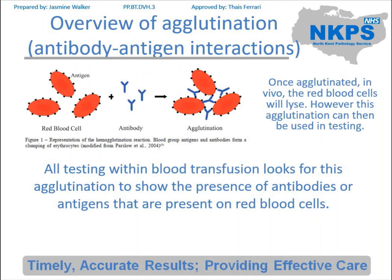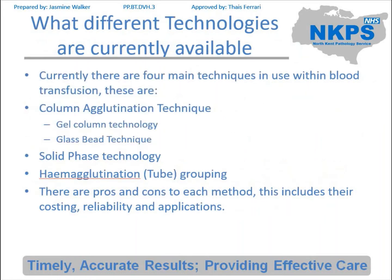The same is applicable in reverse. So if we're looking to see whether or not a patient has a specific antibody, then we will use reagent red cells that have specific antigens on them and again look for agglutination. Different technologies will do this in a different way and that's what we're going to go through.